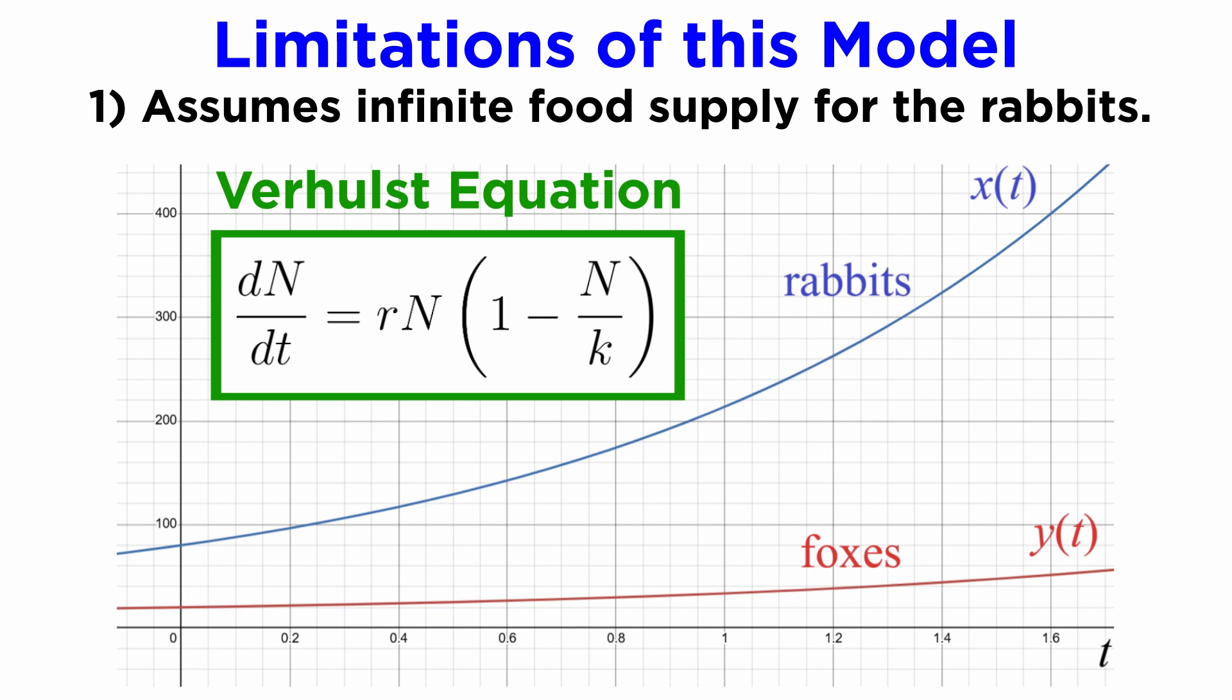In our case, accounting for finite resources would be one way to improve the model, perhaps using the ideas developed in the Verhulst equation we saw at the start of this series.